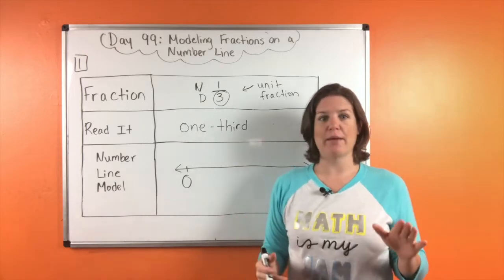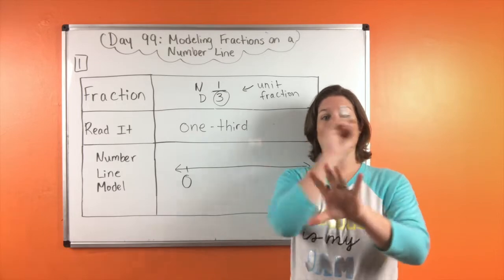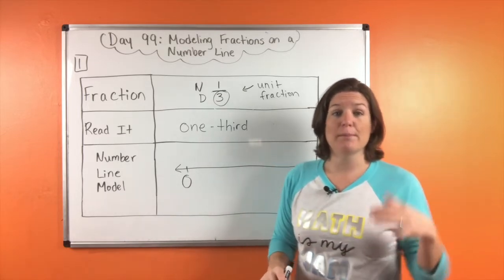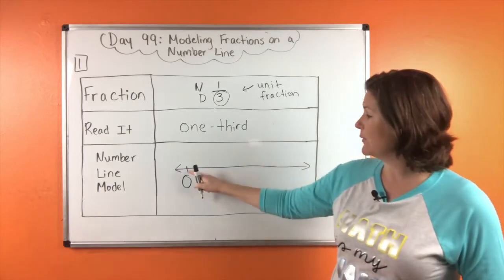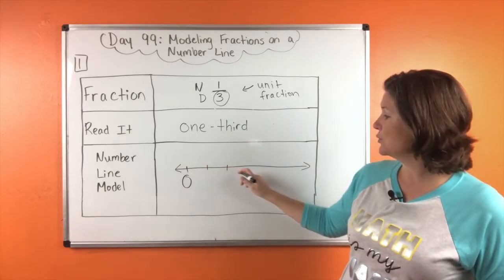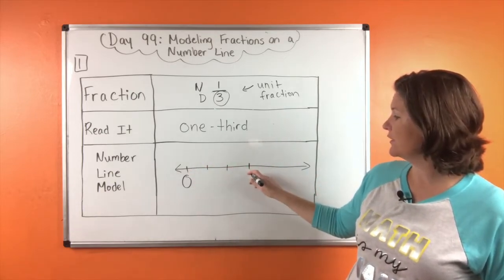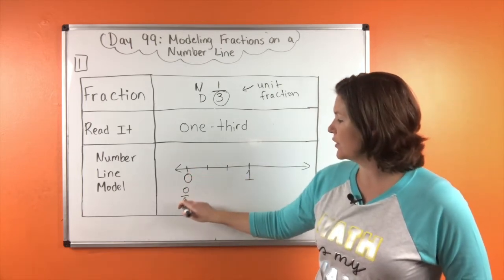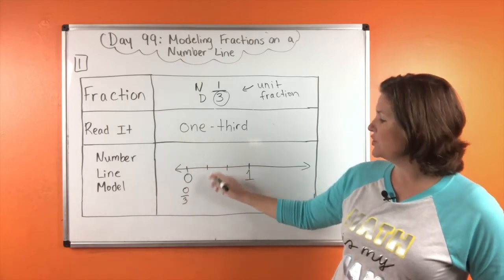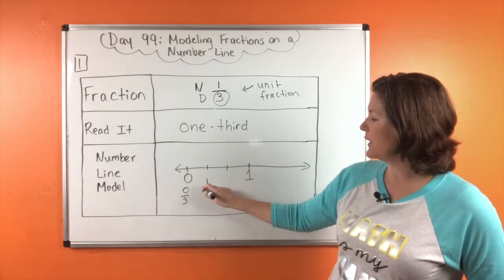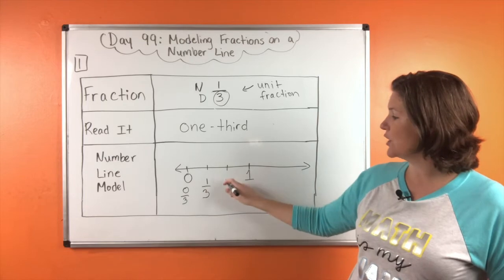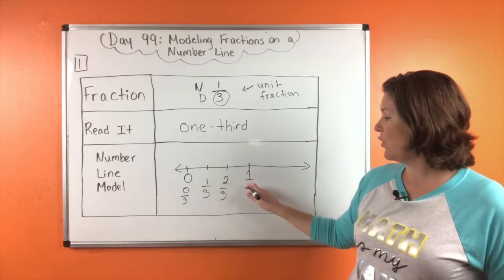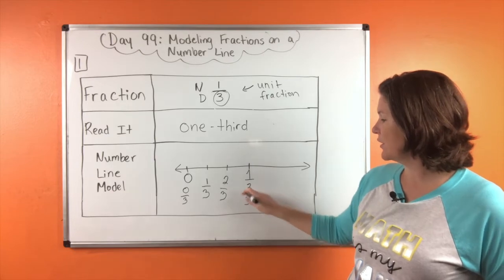So in our area model that meant we needed 3 equal parts. Well now it means that we need 3 equal jumps between each whole — so that would be 1, 2, 3. Right here this would be 1 whole. That means this would be 0 thirds. If we took 1 jump that would be 1 jump out of 3. Two jumps would be 2 thirds. And 1 whole is the same as 3 thirds.